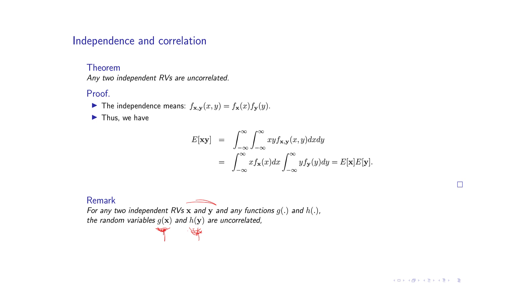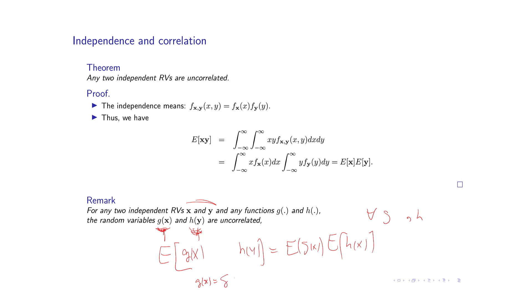Now the question is: if we have the property that any function g(x) is uncorrelated with any function h(y) — meaning the mean of g(x)·h(y) equals the mean of g(x) times the mean of h(y) for all g and h — can we say that x and y are independent? The answer is yes. As a hint, use g(x) = delta(x − x₀) and h(y) = delta(y − y₀). If they are uncorrelated for all x₀ and y₀, the joint distribution can be decomposed. So independence is equivalent to all functions of x being uncorrelated with all functions of y.